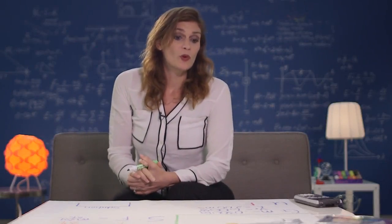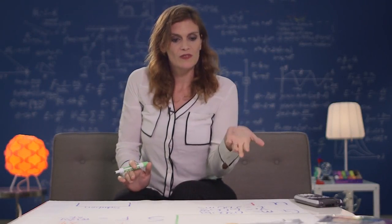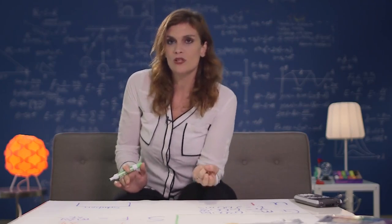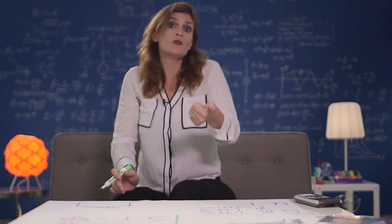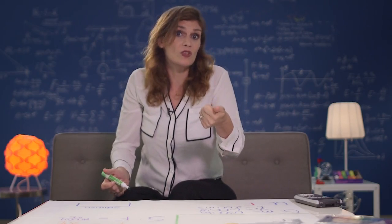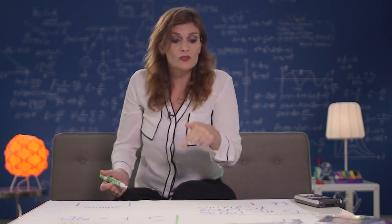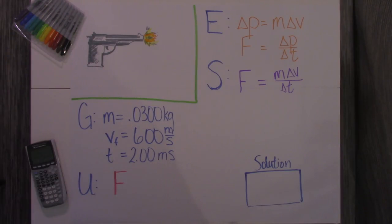We have a problem where a bullet is leaving a gun. The givens are: the mass of the bullet is 0.03 kilograms, and the velocity when it leaves the gun is 600 meters per second. The gunpowder causes an explosion, so the initial velocity is 0 and the final velocity is 600 meters per second — and this all happens in 2 milliseconds. We want to find the force that the gunpowder explosion exerts on the bullet.